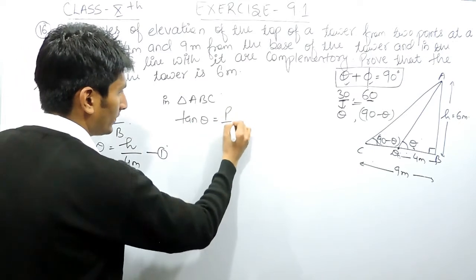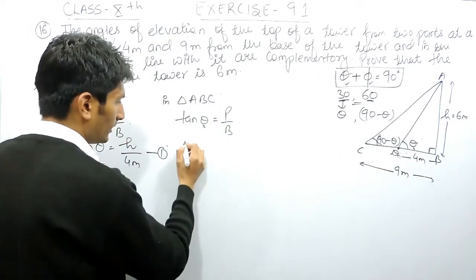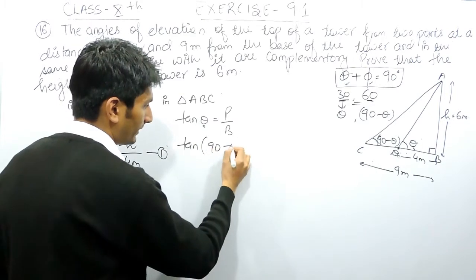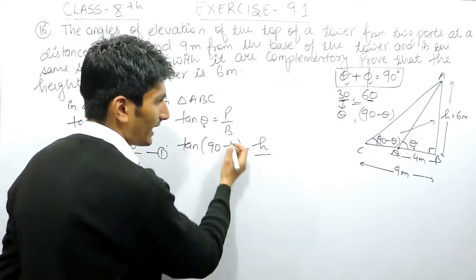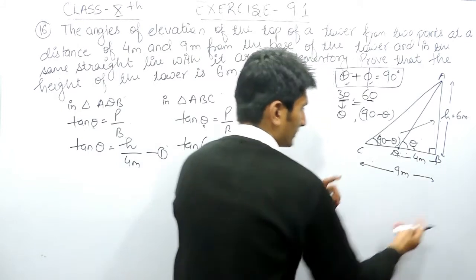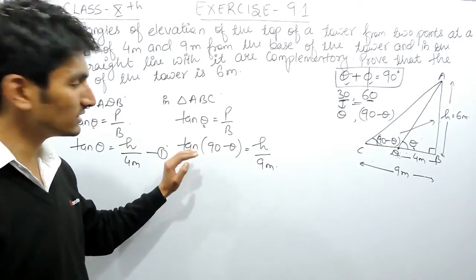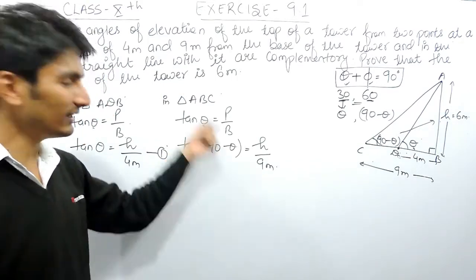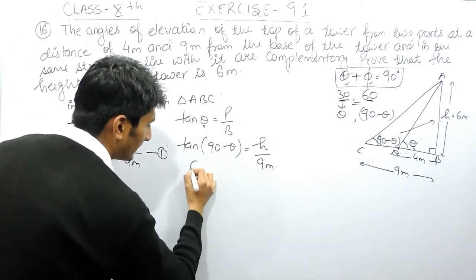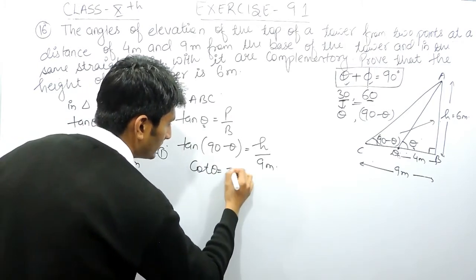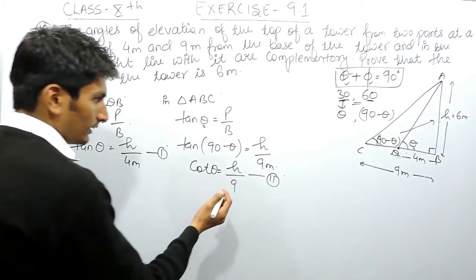In the second triangle ABC, tan of the angle equals perpendicular upon base. For this bigger triangle the angle is 90 minus theta, so tan(90 minus theta) equals h upon 9. From the previous chapter we know that tan(90 minus theta) equals cot theta. So we can write cot theta equals h upon 9. This is our second equation.